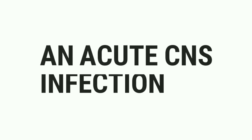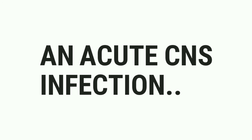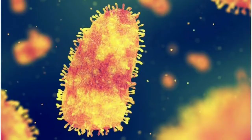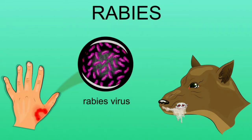Rabies is an acute central nervous system infection which is transmitted by an animal bite. Rabies is transmitted by the virus called rhabdovirus, and this virus is transmitted to a human from the bite of an infected animal through the skin or mucous membrane.